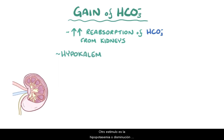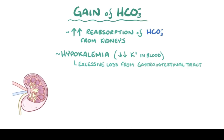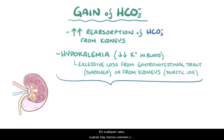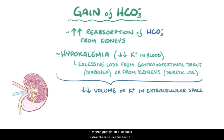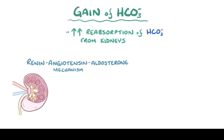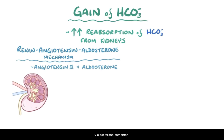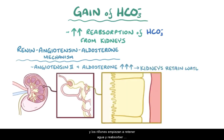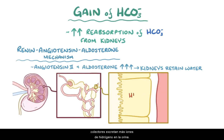Another stimulus is hypokalemia, or decreased levels of potassium in the blood, which can be due to excessive loss from the gastrointestinal tract like in diarrhea, or from the kidneys due to diuretic use. When there's less volume or less potassium in the extracellular space, it triggers the renin-angiotensin-aldosterone mechanism. As a result, angiotensin-2 and aldosterone levels rise, and the kidneys start to retain water and reabsorb more bicarbonate in the proximal convoluted tubule. In addition, the alpha-intercalated cells of the distal convoluted tubule and collecting ducts secrete more hydrogen ions into the urine, and also make new bicarbonate ions, which get reabsorbed.